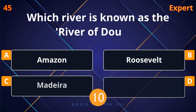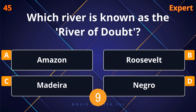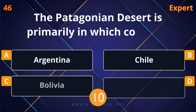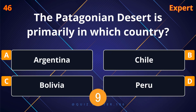Near Antofagasta. What city was the first capital of Brazil? Salvador. Which river is known as the River of Doubt?